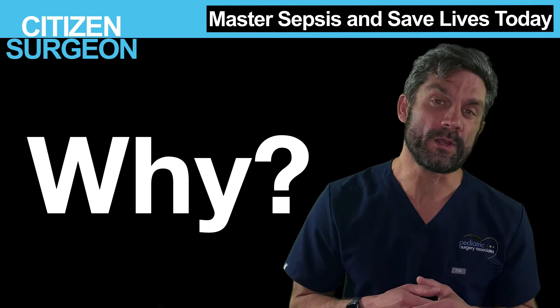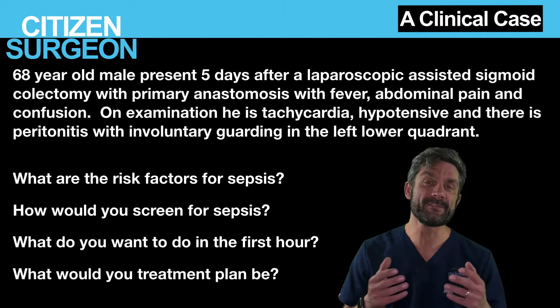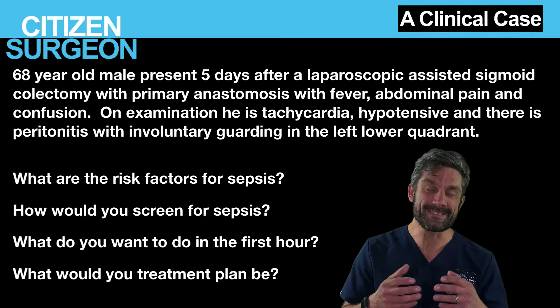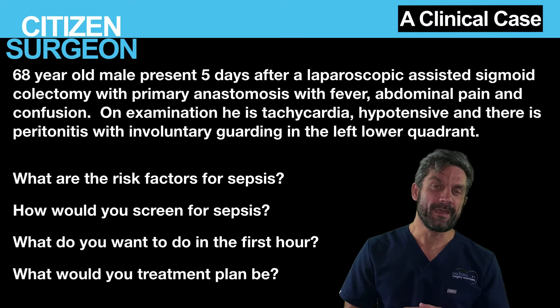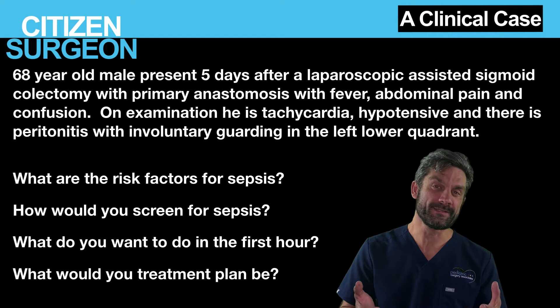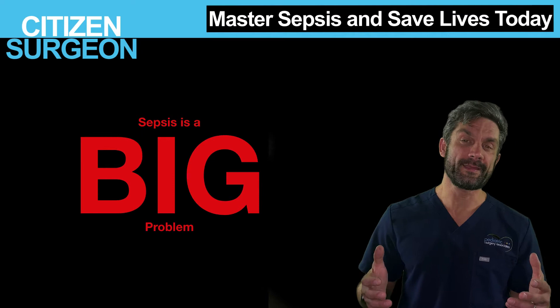We're going to go over a case now and then revisit it at the end to make sure we learn all the components of sepsis. You have a 68-year-old male who presents five days after a low anterior resection for rectal cancer. He has abdominal pain, fever, and involuntary guarding in the left lower quadrant, a little bit of confusion, and an elevated white cell count. What are the risk factors? How do you screen for sepsis in this patient? What do you need to accomplish in the first hour, and ultimately, how are you going to treat him?